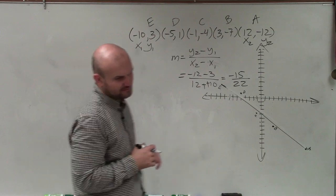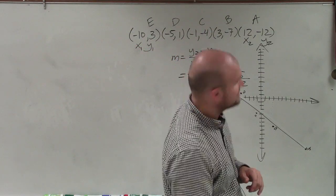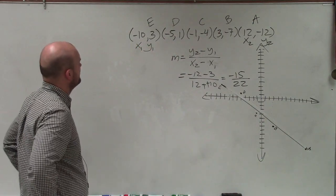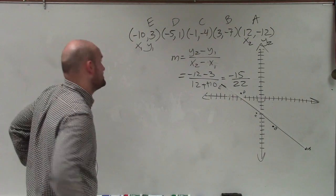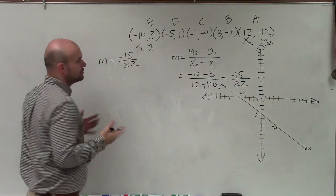Negative 12 minus 3 is going to be negative 15. 12 minus negative 10 is going to be added, so that'd be a positive 22. So m equals negative 15 over 22.